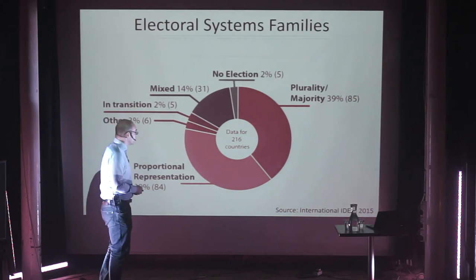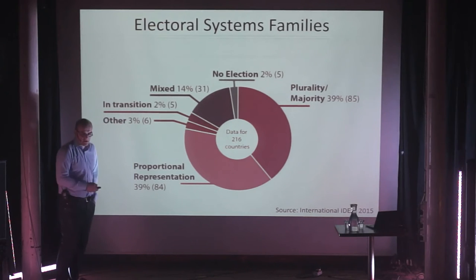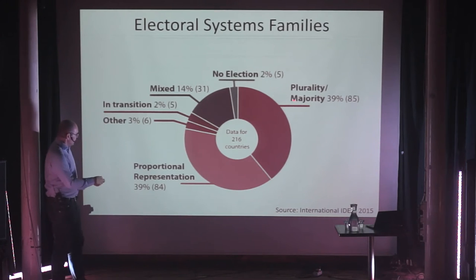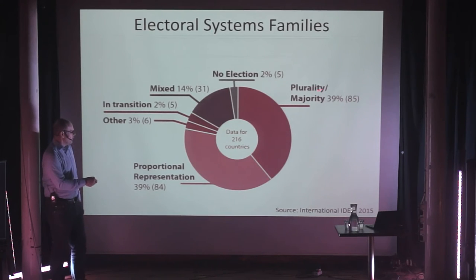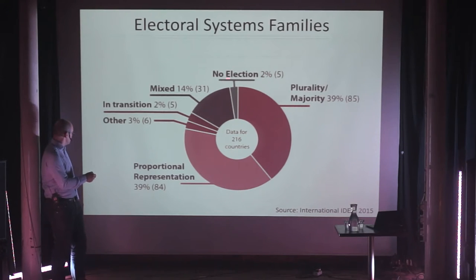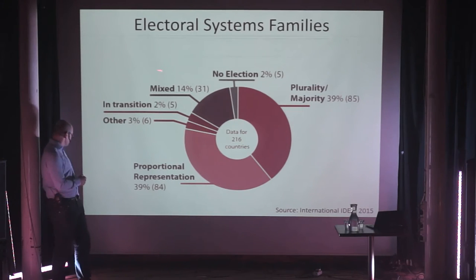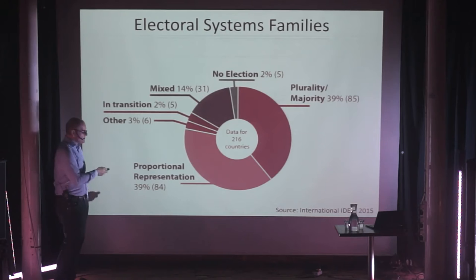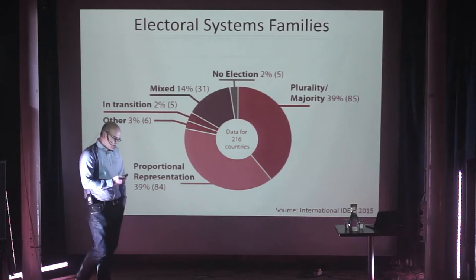Different countries now have to make different decisions about what is actually a good voting scheme. There are about 260 countries in the world — 39% or 85 use first-past-the-post. Some countries didn't come up with the idea that elections are a good idea. Some are in transition between systems, and then we have proportional representation as well. If you understand the mathematics behind it, we get better.